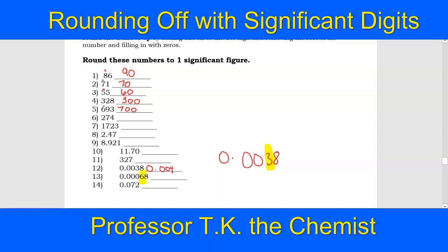The eight tells that seven to go up. So we're going to make that become 0.0008. The eight goes off and we leave the number as is, 0.0008.